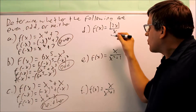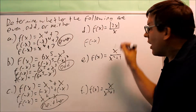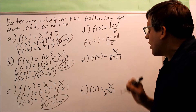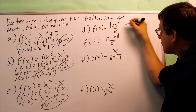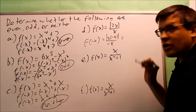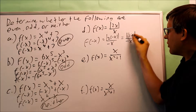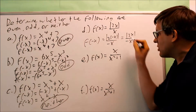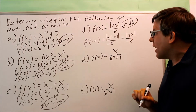Take a look at these. For this one, we do the same test — putting in negative x for x. You get the absolute value of 2 times negative x over negative x. Simplifying, the absolute value gets rid of the negative on top, giving the absolute value of 2x over negative x. This is exactly the same as the original except with an extra negative out in front — the same thing as negative f of x. So this one is also going to be odd.